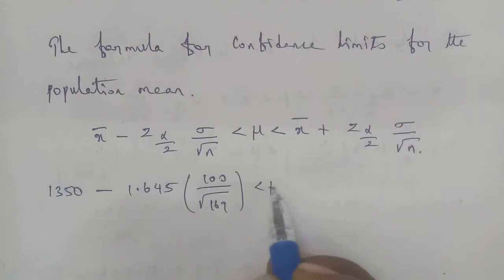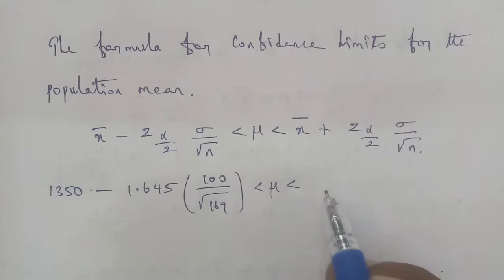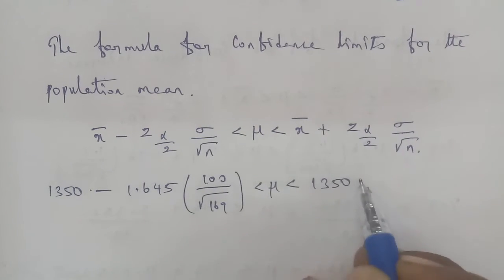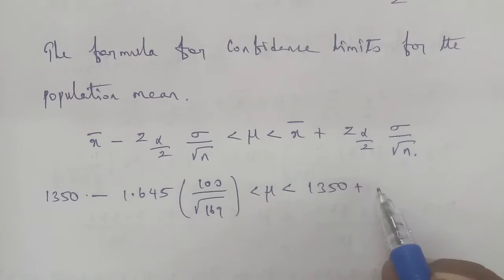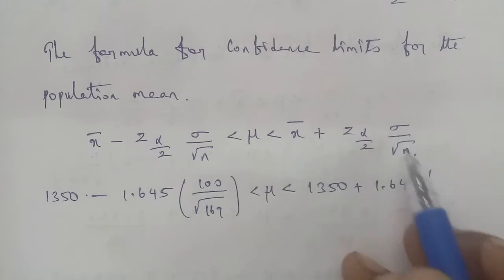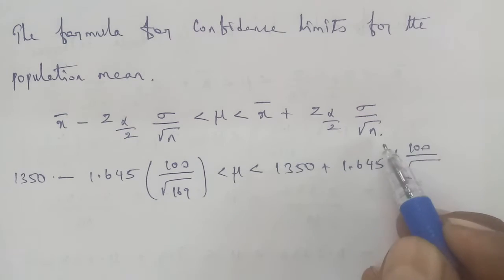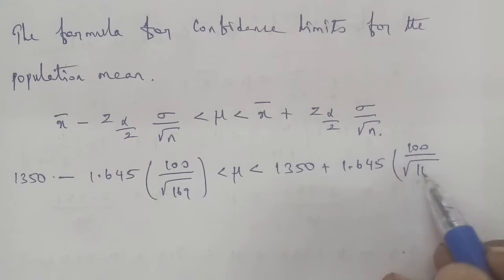Less than μ, and on the upper bound we have the same values: x̄ value 1350 plus z(α/2) value 1.645, multiplied by sigma over root n. Sigma's value is 100, so that's 100 divided by root n, where n's value is 169.